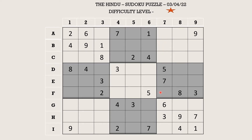Let's start from column 7. There is a 9 in column 9 and a 9 in column 8, which blocks these two cells. So in this block, 9 goes in row 7. Now there is a 1 and 4 in the 9th block which blocks this cell, and a 1 and 4 again in row B which blocks this cell. So in column 7, 1 and 4 go in these two cells.